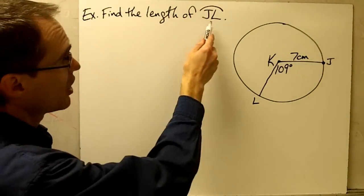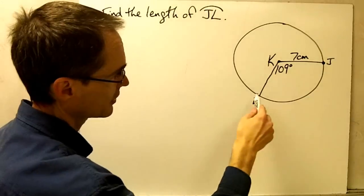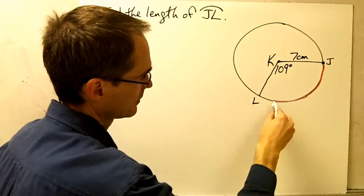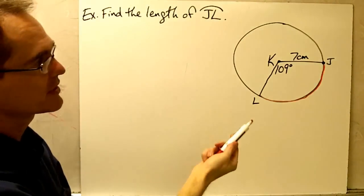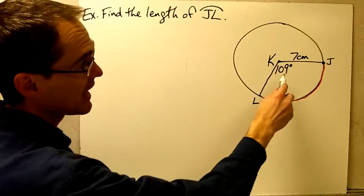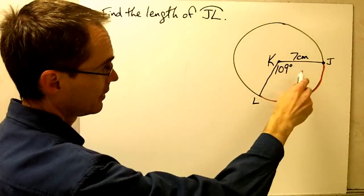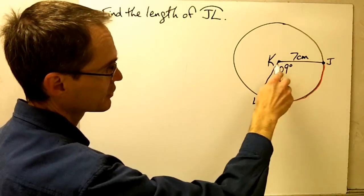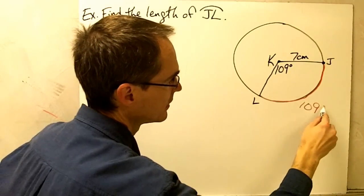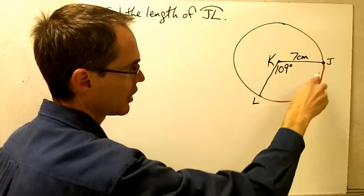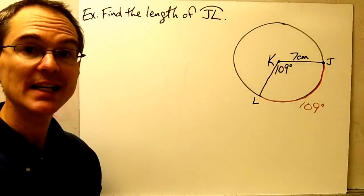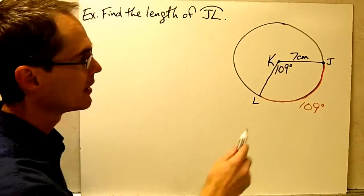Find the length of arc JL. Here's arc JL. I know the circle has a radius of 7 centimeters, and the central angle of arc JL is 109 degrees, which means the measure of arc JL is 109 degrees. That means I have all the information I need to calculate the arc length.